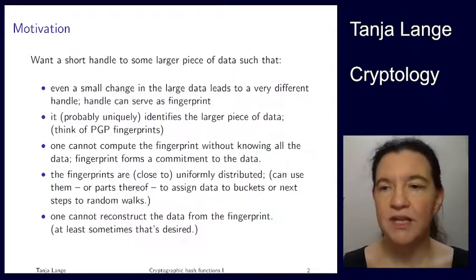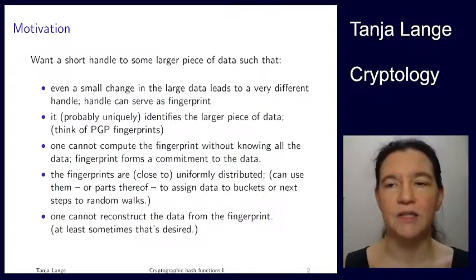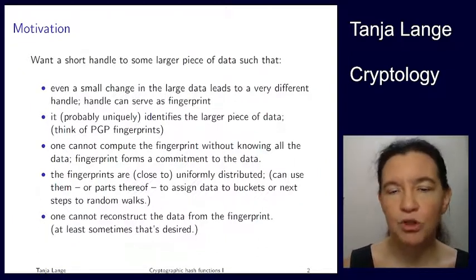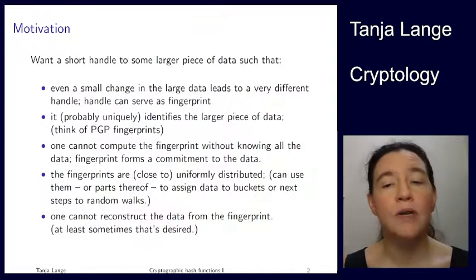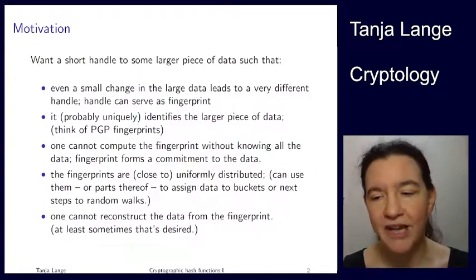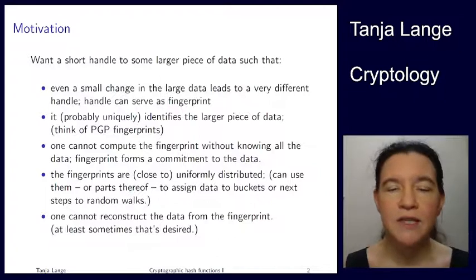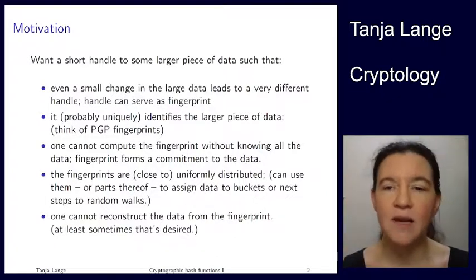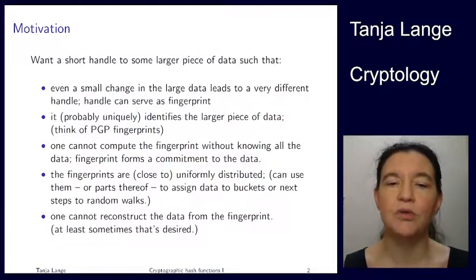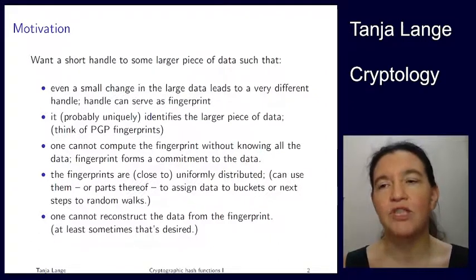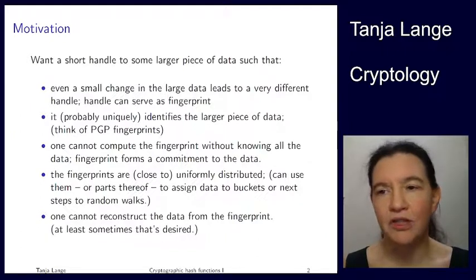Other purposes hash functions are sometimes used for: you get a sort of uniform distribution on the outputs. You might want to use this for allocating storage — where to save a file. Or if I had lectured about hash functions before talking about the Pollard rho method, I could have said that the index — the step that we take next — would be chosen by a hash function. Which step to take next in the random walk would typically also be a function of a hash function.